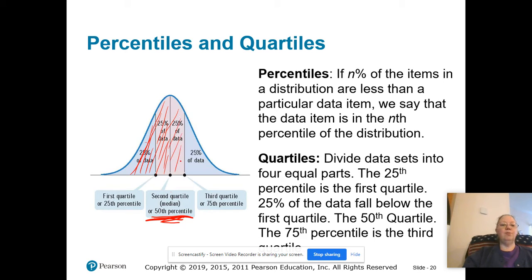Continuing, we have the third quartile, which is the 75th percentile. So 75% of all data items will fall below the third quartile.